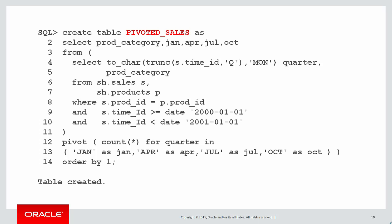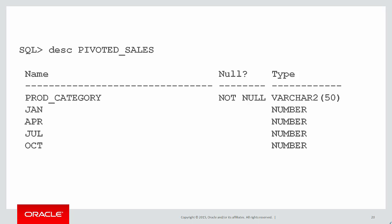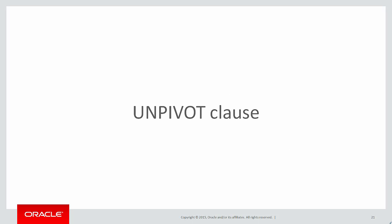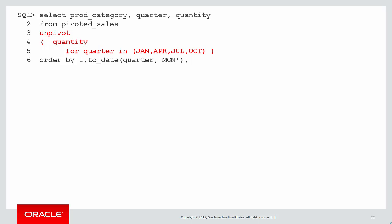Let's create a table called pivoted_sales — this is going to be the base for our data that we're going to now unpivot. If we look at pivoted_sales, it's like our source data now actually came into us as four separate columns, one for each quarter. We want to turn that back into rows like our original query. The unpivot clause is very simple as well — this is how it looks.